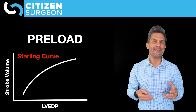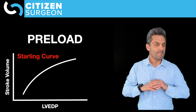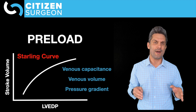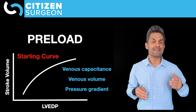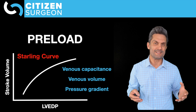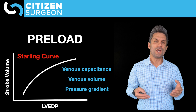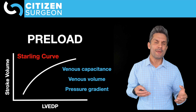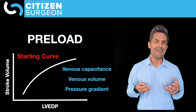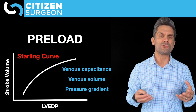What affects left ventricular end diastolic pressure? Three things: number one, venous capacitance — the amount of blood that can be stored in the venous system; number two, the volume of blood in the venous system; and number three, the pressure gradient between the right atrium and the mean venous pressure. About 70% of blood is stored in the venous system.